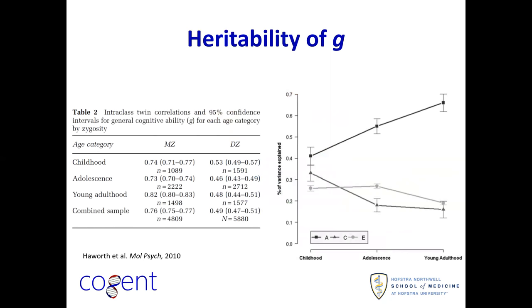This is called G, the general cognitive ability. This ability is sometimes also referred to as IQ. It's measured and tapped into by standard tests of IQ. But for purposes of this talk, I'll mostly be referring to it as G — though to a first approximation, those terms can be used somewhat interchangeably.